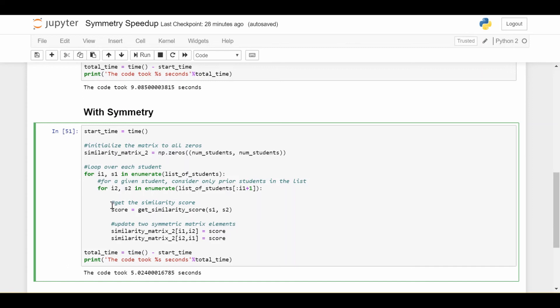So given that we do that, we go ahead and get the score for student s1 and s2. We go ahead and update the similarity matrix at i1, i2 as we did before. But we also update the similarity matrix at i2, i1 because we know the score there has to be the same because of symmetry. So we're doing kind of two things at the same time. We're not calculating the score twice. We're just using the score to update two places in the matrix, two symmetric places in the matrix. If we do that, we find the code takes about five seconds.